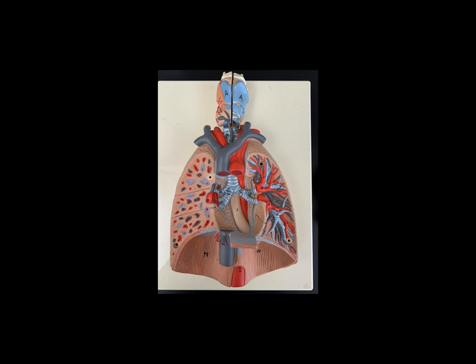Now we've dissected away the front of the lungs so we can see inside. From this view we can still see the larynx and the trachea, and now we can also see the trachea down here right before it separates. When it separates, we can see two tubes coming off: over here on the right is the right primary bronchus and over here on the left is the left primary bronchus. They're both very short because immediately they separate into smaller tubes.